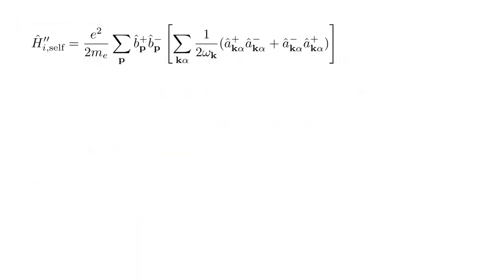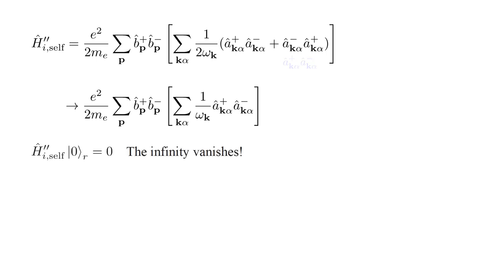Here's the self-interaction part of the h-hat i double prime operator. Applying normal ordering, the second problematic a-hat operator term becomes identical to the first term. This gives us two times the first term, which cancels a factor of two in the denominator. The resulting operator applied to the photon vacuum state vanishes, and along with that, our infinite electron self-energy vanishes also.